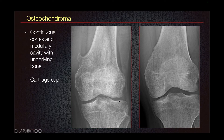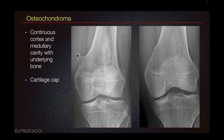Let's talk about osteochondromas. Osteochondromas are benign bone tumors. One of the main characteristics of osteochondroma is that the cortex and the medullary cavity of the underlying bone is continuous with the osteochondroma. They also have a cartilage cap that we do not see on radiographs but can be seen on MRI.